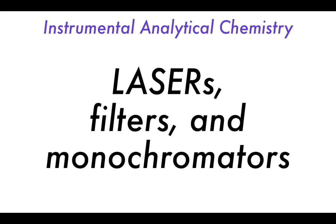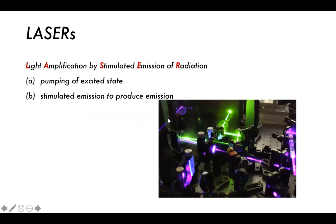Welcome to this next part on quantitative instrumental analytical chemistry where we will be talking about the processes by which lasers work in a very general sense. We'll be looking at filters and how those can help us choose certain parts of the electromagnetic spectrum produced from a light source - particularly important for things like tungsten filament lamps. Then we'll look at monochromators, which are another method of choosing the wavelength of light that we want. We'll talk today about prism monochromators, and in the next session about other monochromators.